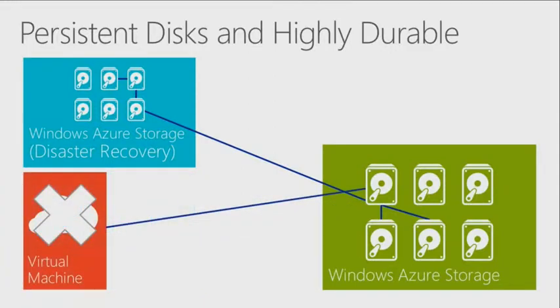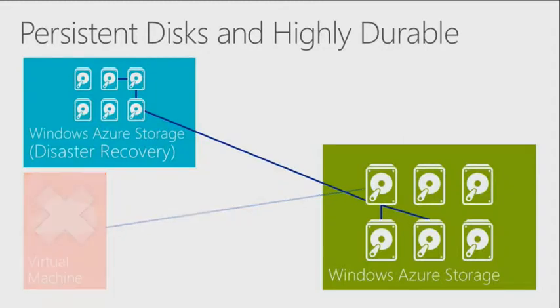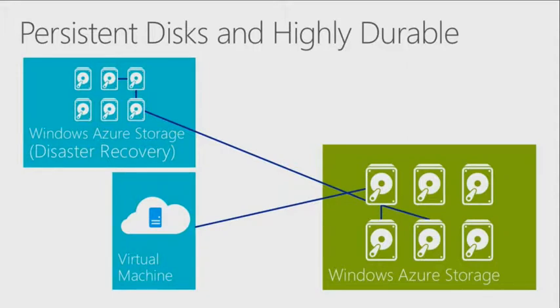We also have additional redundancy on the compute side. If a Hyper-V host running a virtual machine dies, it comes back up on another virtual machine — you might just see it as a reboot. If there's a hardware problem and a server goes down, we put your workload on a different server and keep you going.